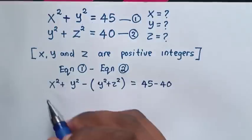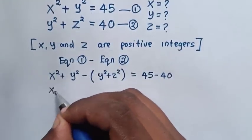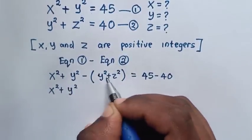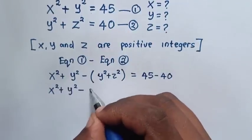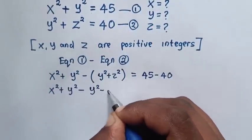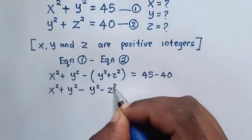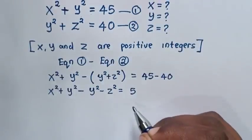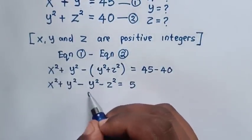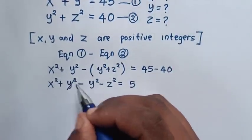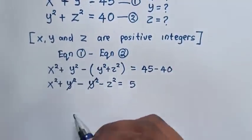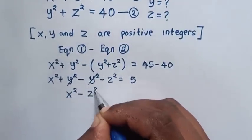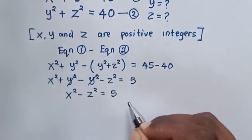So here it will be x squared plus y squared. Expanding the negative inside the bracket, it will be negative y squared minus z squared, is equal to 5. Then, y squared minus y squared is 0, so these will cancel. So it will be x squared minus z squared is equal to 5.